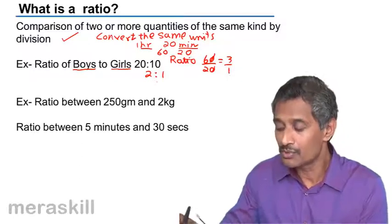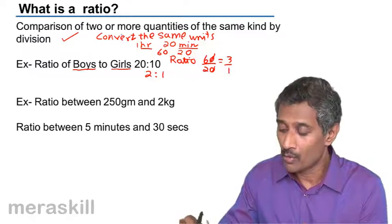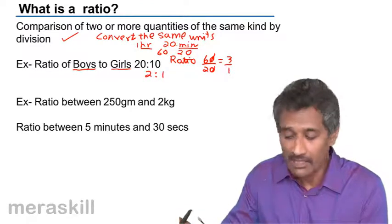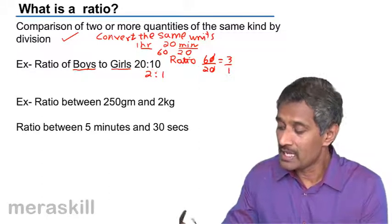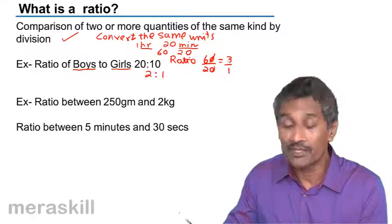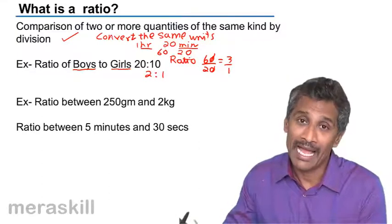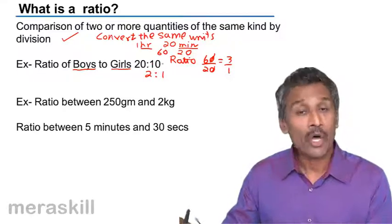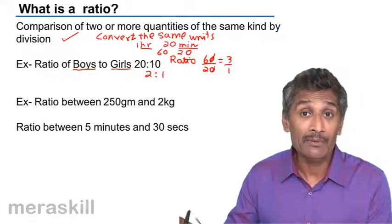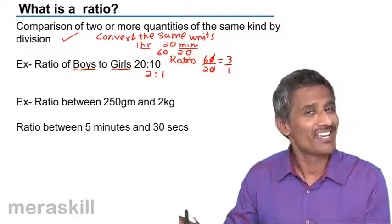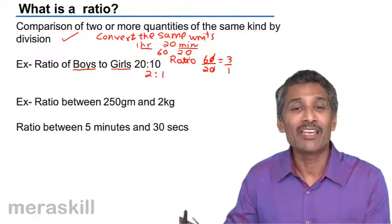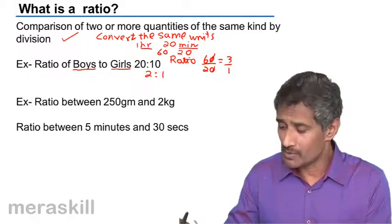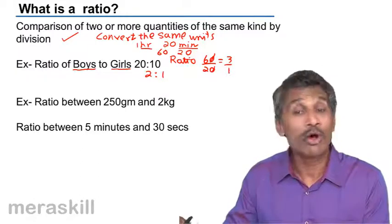So we need to take care of 3 things. One is we can compare two or more quantities of the same kind. Secondly, the final ratio has to be in the most simplified form. And in case the quantities being compared are not in the same units — even if they are quantities of the same kind — we need to convert them to the same units. You can also compare two or more quantities, as mentioned.